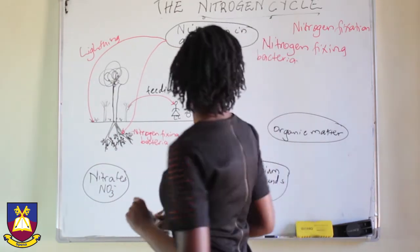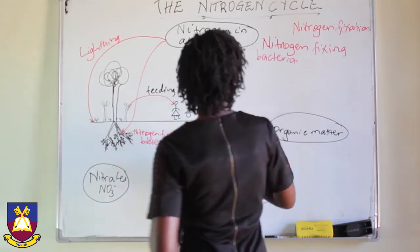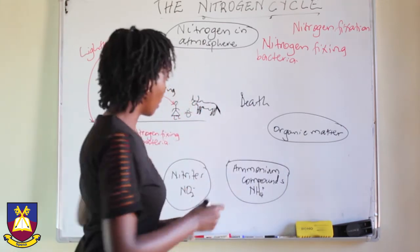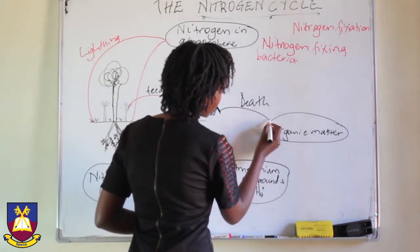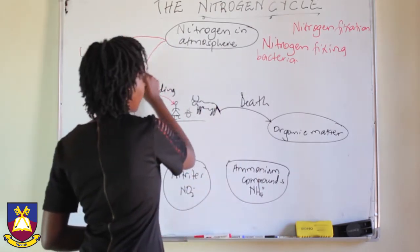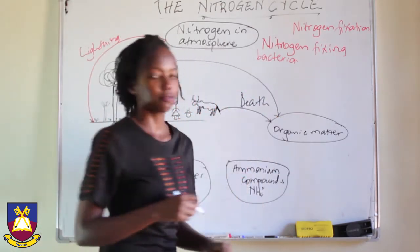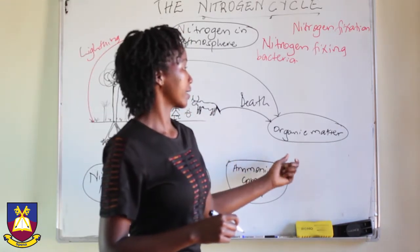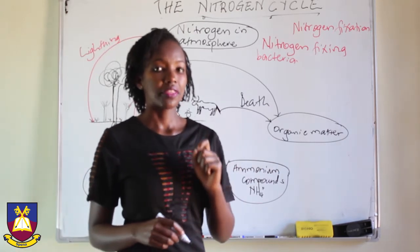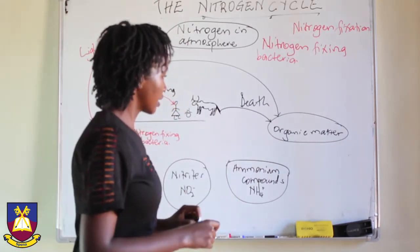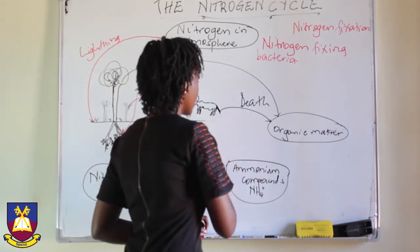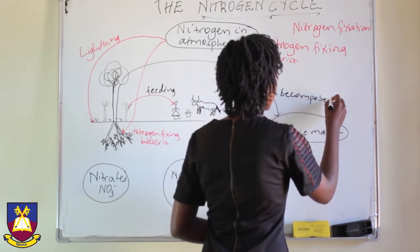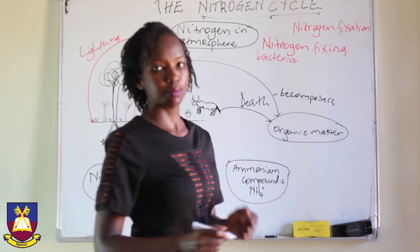After some time, these plants and animals and insects die — we have death. Even the plants finally die and form organic matter. They decay and form organic matter, and this organic matter is acted on by decomposers.